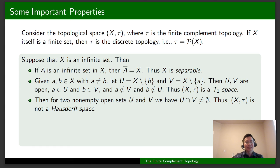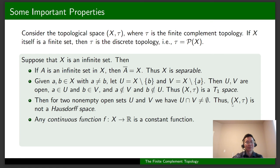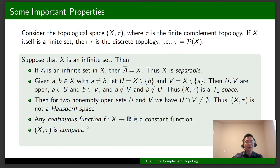For two non-empty open sets U and V, we can show that their intersection is non-empty by contradiction. Therefore, X with tau is not a Hausdorff space. Another interesting property is that any continuous function from X to ℝ, where ℝ is equipped with the usual topology, is a constant function. We can also show that X is compact, but it is not connected. Please prove these properties by yourself.